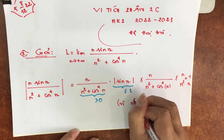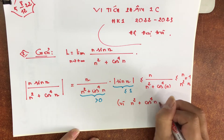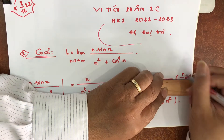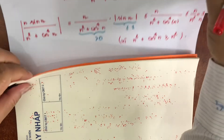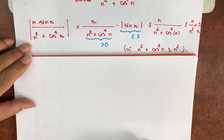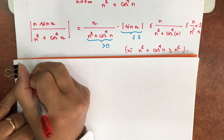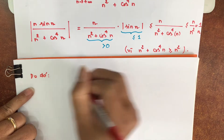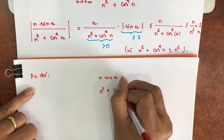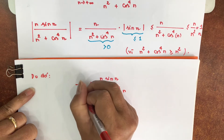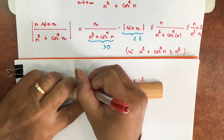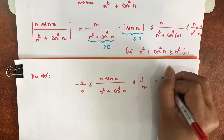Một đơn vị là bình phương cộng với cốt mũi 4, lớn hơn hoặc bằng n bình. Lớn hơn hoặc bằng n bình phương cộng với cốt mũi 4, lớn hơn hoặc bằng trừ 1 chia n. Nhỏ hơn hoặc bằng 1 chia n. Thì các anh chị lưu ý đây là một cái cách kẹp. Điều này đúng với mọi n lớn bằng 1.